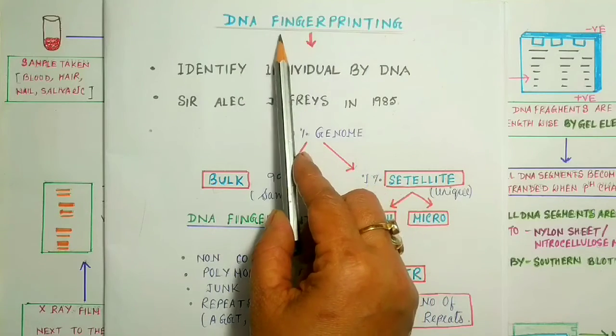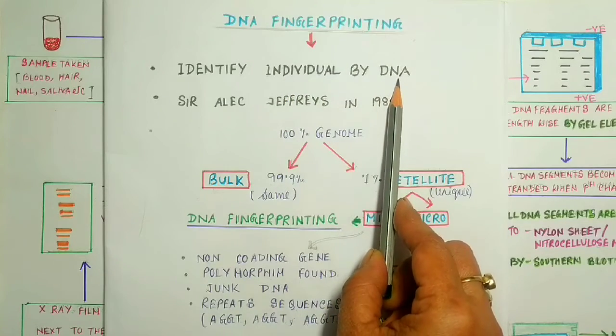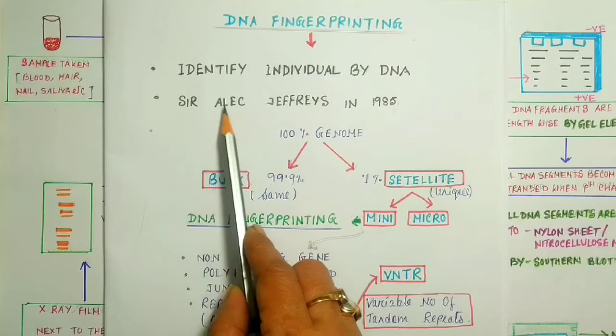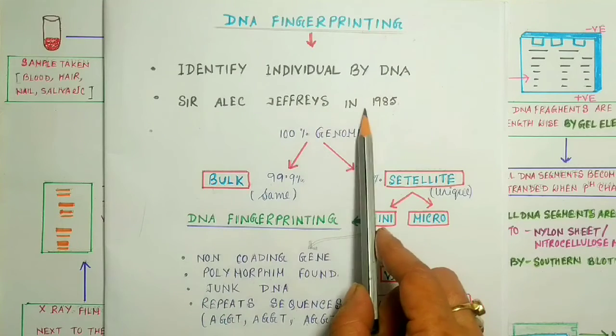DNA Fingerprinting is a technique used to identify individuals by using their DNA. This technique was first discovered by the British scientist Sir Alec Jeffreys in 1985.